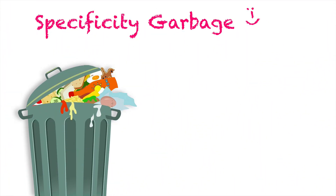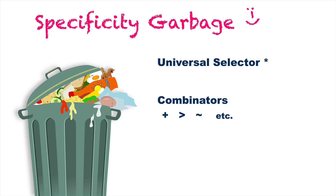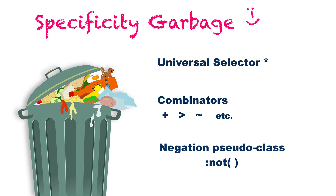Another useful thing to know about specificity is which selectors are disregarded or not given any weight. The universal selector — the star selector — is given no weight whatsoever. Same thing with combinators — those are disregarded. And also the negation pseudo-class: even though other pseudo-classes like hover and active are given weight, the :not pseudo-class is given no weight whatsoever. However, if you do pass a class into the :not declaration, that class is given weight just like a regular class selector.